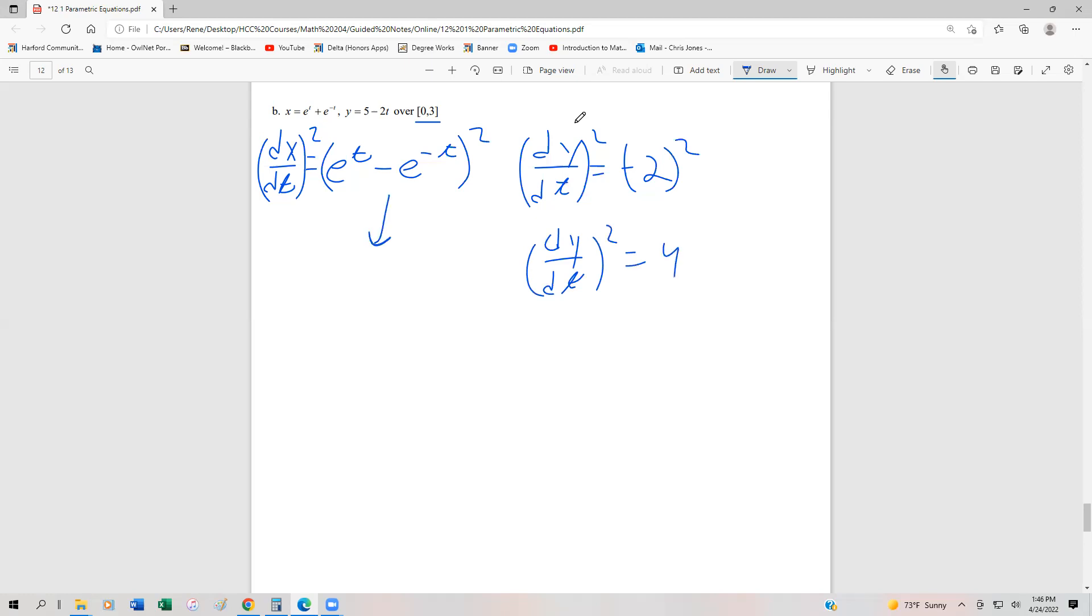And for this guy right here, we're going to have to change this into a FOIL. So (e^t - e^(-t))(e^t - e^(-t)). And if we FOIL it out, that's going to give us e^(2t) - e^t · e^(-t) - e^t · e^(-t), and then finally plus e^(-2t).